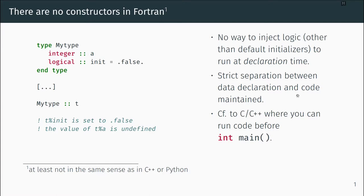The reason I say this: on the left side you see a type with default values. As soon as you declare the type in a data section or at the beginning of a procedure, the attributes have the desired values. But there is no way, as far as I know, to run code during that initialization. In C++, when you declare a type, you can define a constructor which is automatically run in any case — you can start printing, do a network connection, or whatever. Fortran has a strict separation between data declaration including default values, and the actual code you can run.